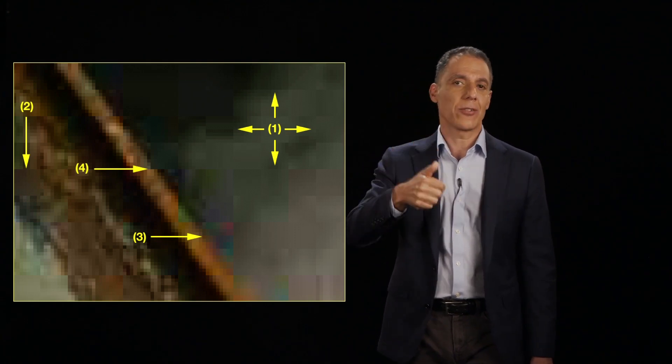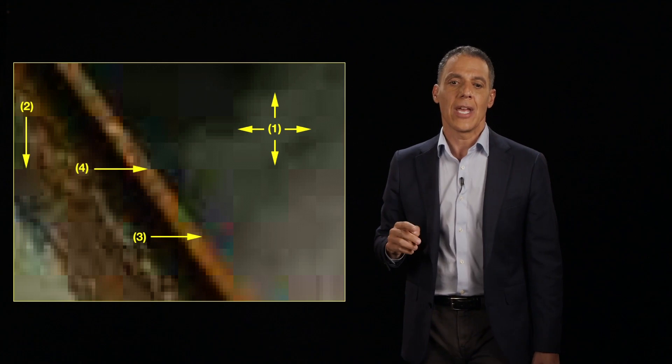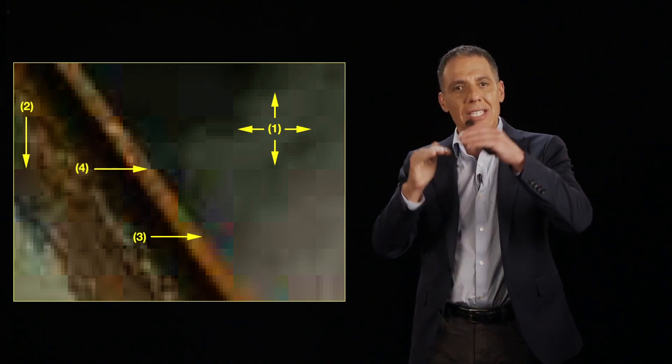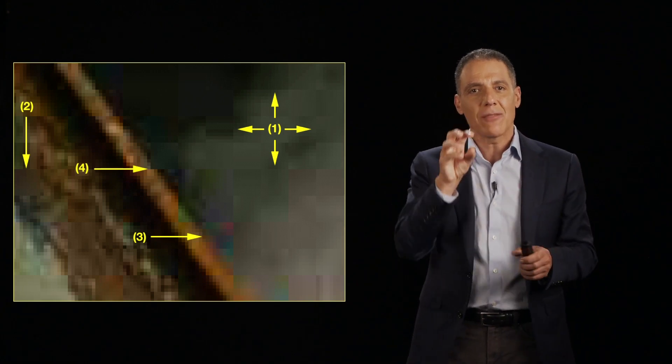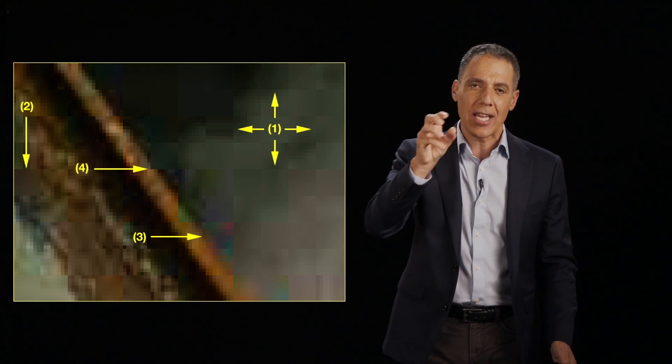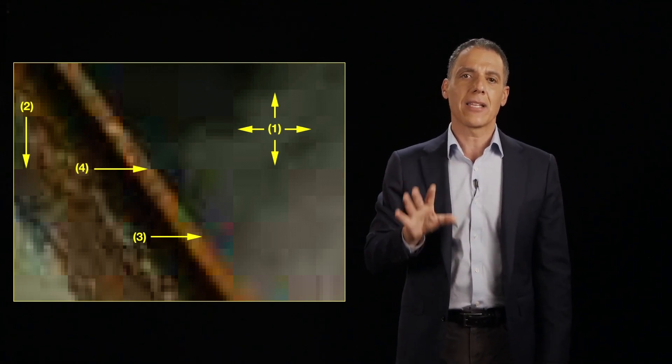Because the human visual system cares less about color than it does about intensity or luminance. And then number four is along what should be a straight edge, you get these jaggies because of that blocking artifact is different along each edge. And so straight lines end up getting a little jaggy. And all of these are highly, highly undesirable.